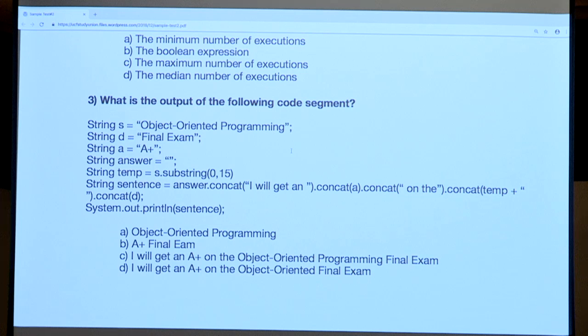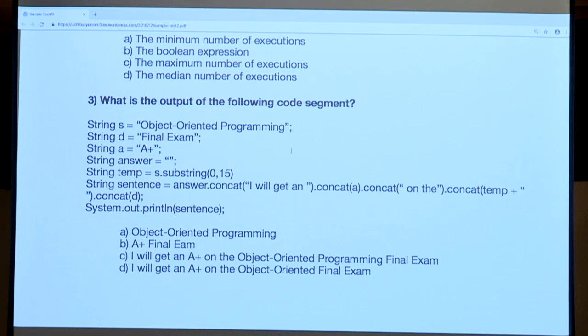Question three is another code tracing question. This time, instead of looking at what a value is at the end of execution, we're looking at the output. Everything in here is strings. We have a string S initialized to 'object oriented programming,' a string D initialized to 'final exam,' A initialized to 'A plus,' and string answer initialized to nothing — just two quotes.